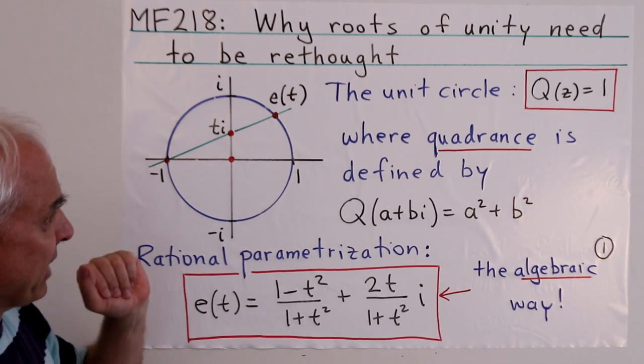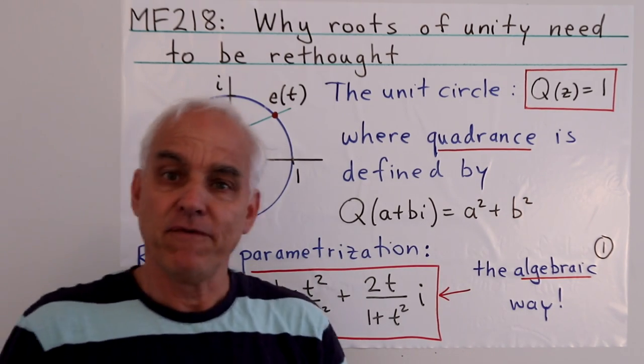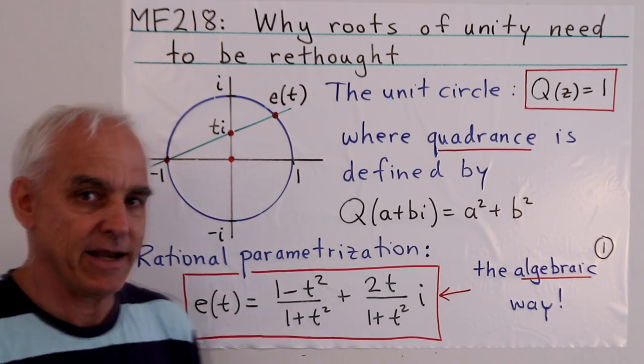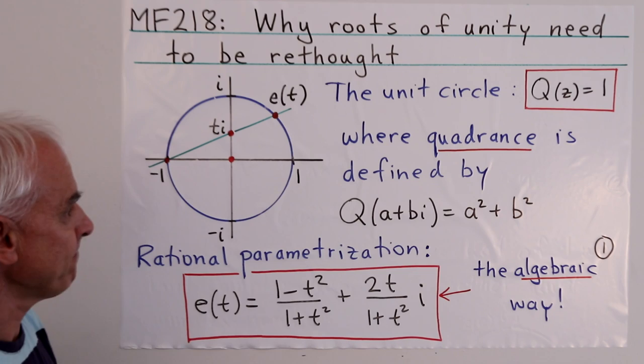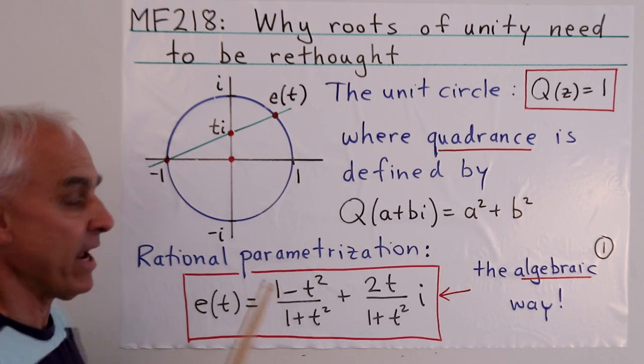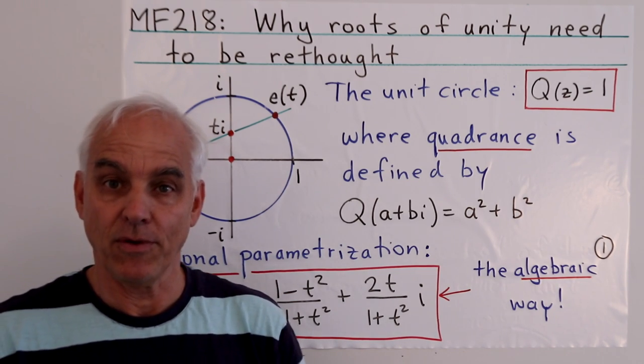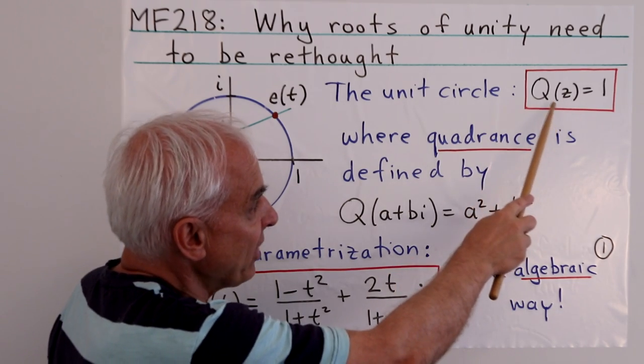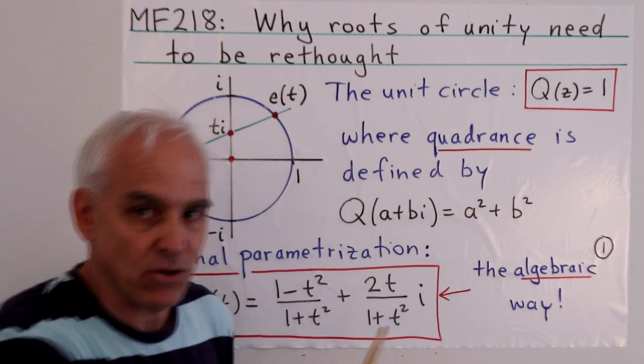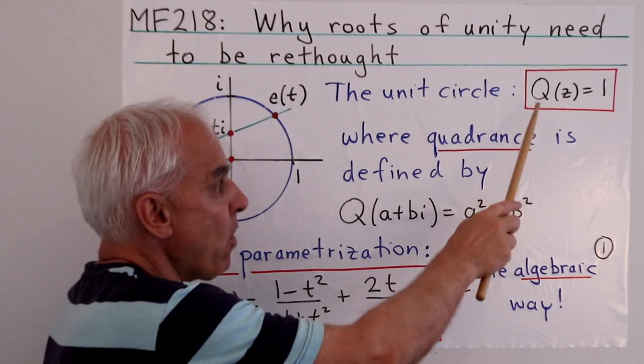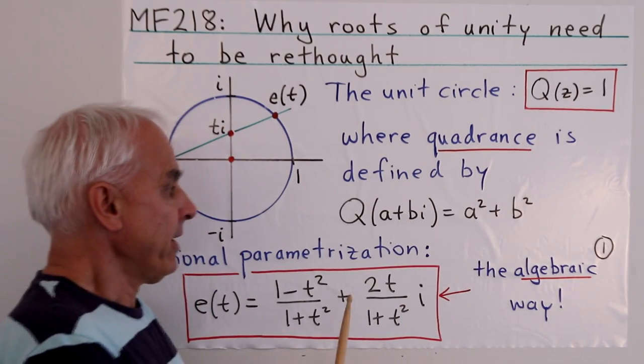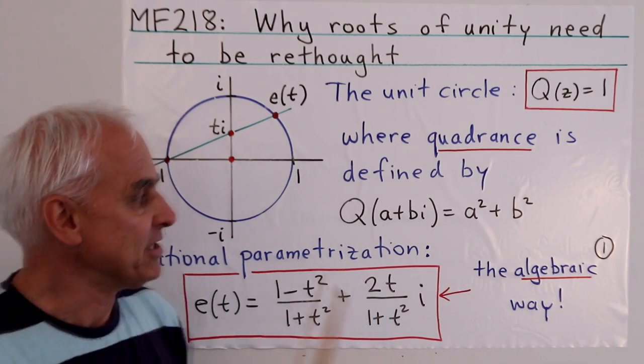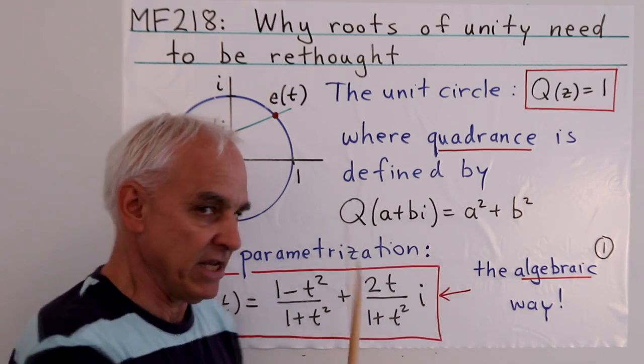The context is the unit circle viewed inside the complex numbers. Here is the number 1 and here is the number i. There is the unit circle given by x squared plus y squared equals 1, or in complex analysis terms, the points z whose quadrance Q(z) equals 1. The quadrance of a complex number a+bi is defined to be a squared plus b squared.